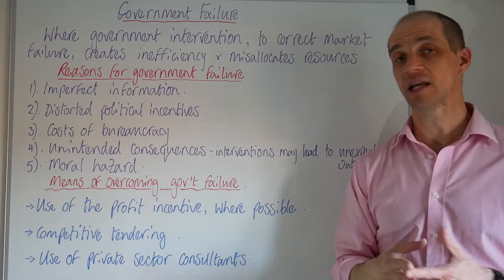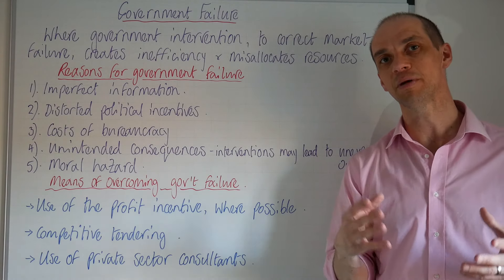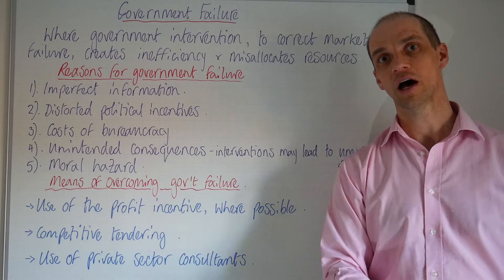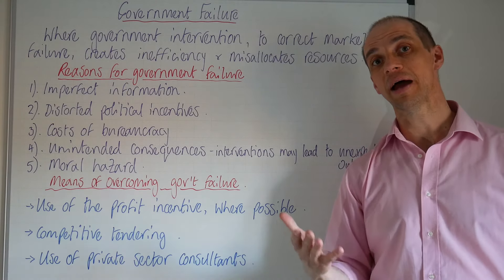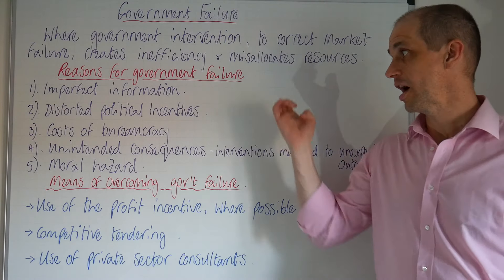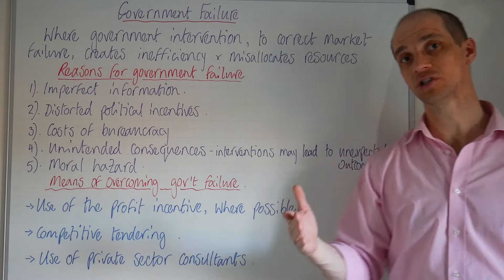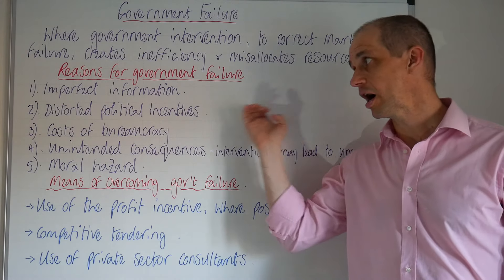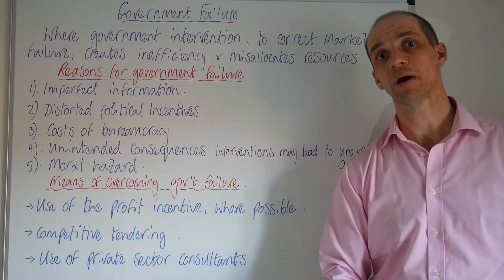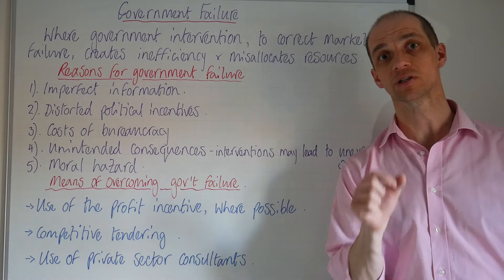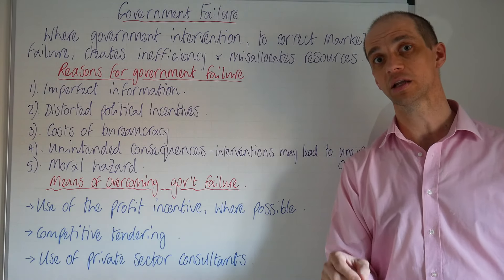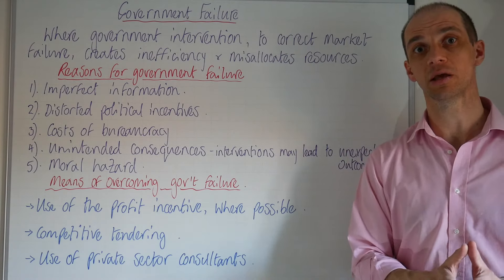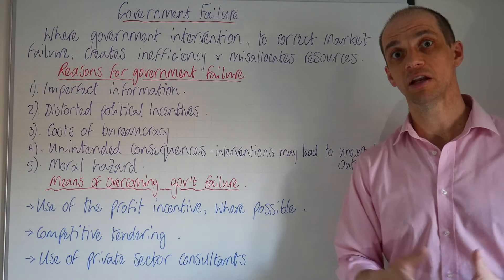Next up is distorted political incentives. Sometimes politicians can be very keen on themselves, and as a direct result they look for so-called legacy projects — really about leaving their own mark on the economy through large capital investment projects that may not create much impact on the wider economy. It can also be due to successful lobbying by pressure groups or private sector companies that incentivise politicians to intervene in the market in a particular way.